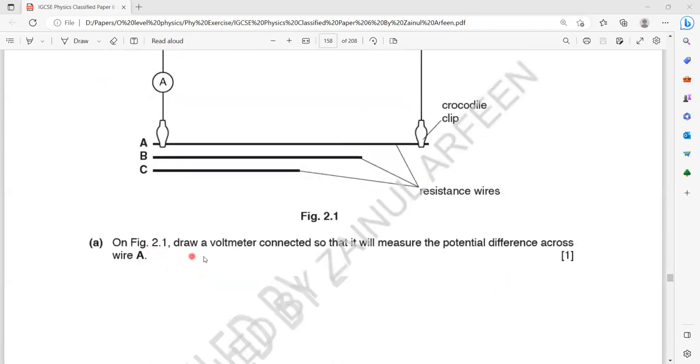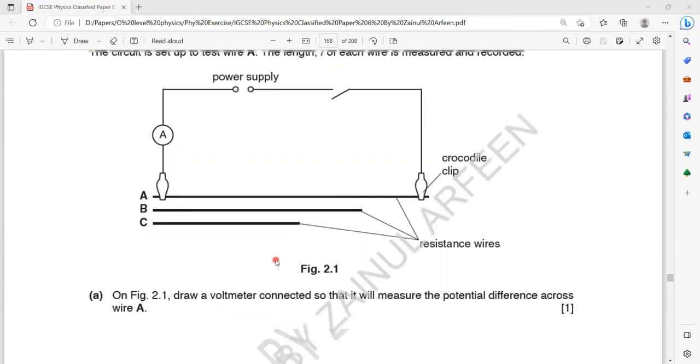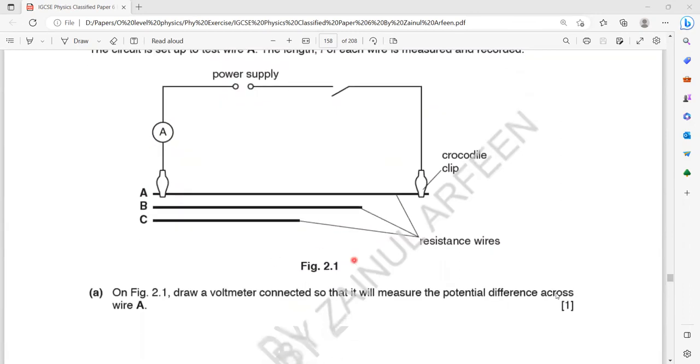On figure 2.1, draw a voltmeter connected so that it can measure the potential across A. If I want to measure the voltage across A, I should connect a voltmeter. You can use screen annotation for that. How a voltmeter should be connected to measure the voltage across A. Yeah, you can connect here, even you can connect here.